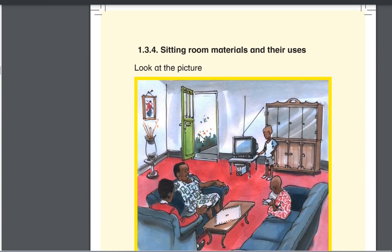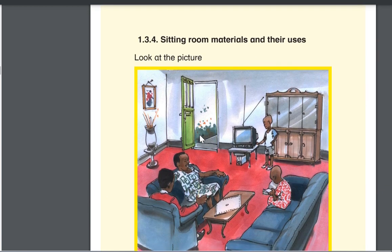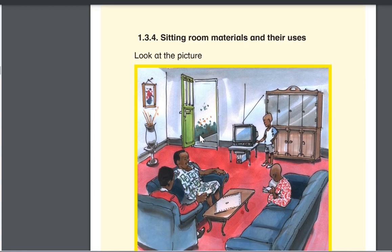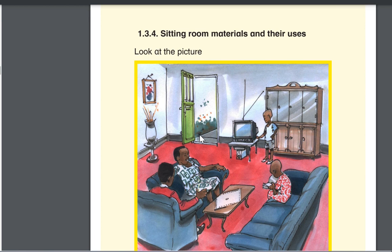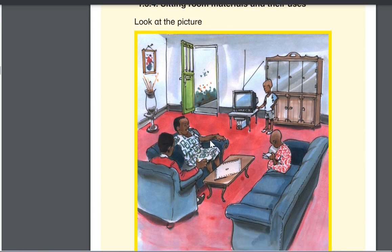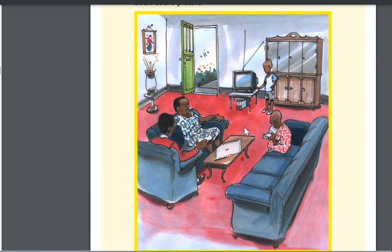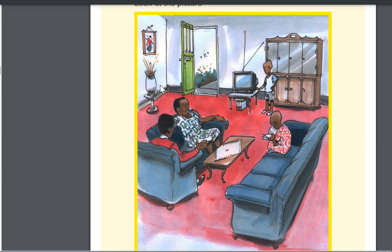When you go to the other picture, you can see that you have the sitting room materials and their users. You can see that in the sitting room you have the chairs, the sofa, you have the table and other materials you can see here in the picture.